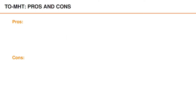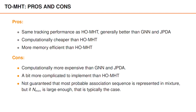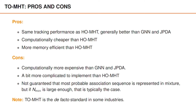We can finish the discussion about track-oriented MHT with some pros and cons. Positive aspects include the same tracking performance as hypothesis-oriented MHT, which is generally better than GNN and JPDA, and track-oriented is usually computationally cheaper and more memory efficient compared to hypothesis-oriented. Among the downsides, track-oriented MHT is still computationally more expensive than GNN and JPDA, it's a bit more complicated to implement than hypothesis-oriented, and we still don't have a guarantee that the most probable association sequence is represented in the MHT density. However, if the maximum number of hypotheses n_max is large enough, that is still often the case. Notably, variants of track-oriented MHT are the de facto standard tracking algorithm in some industries.